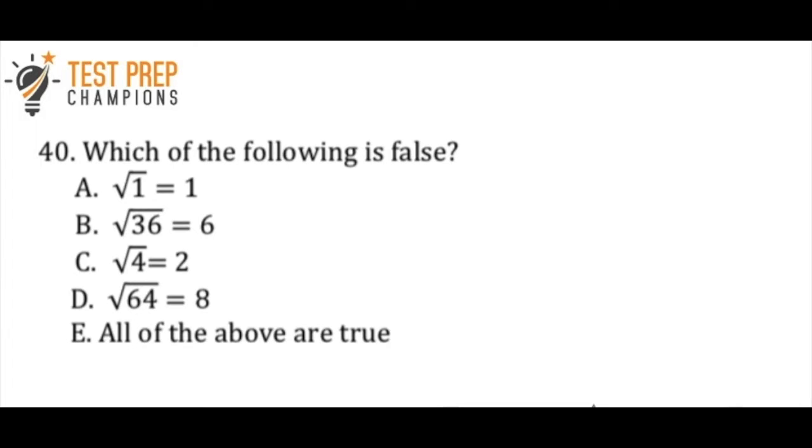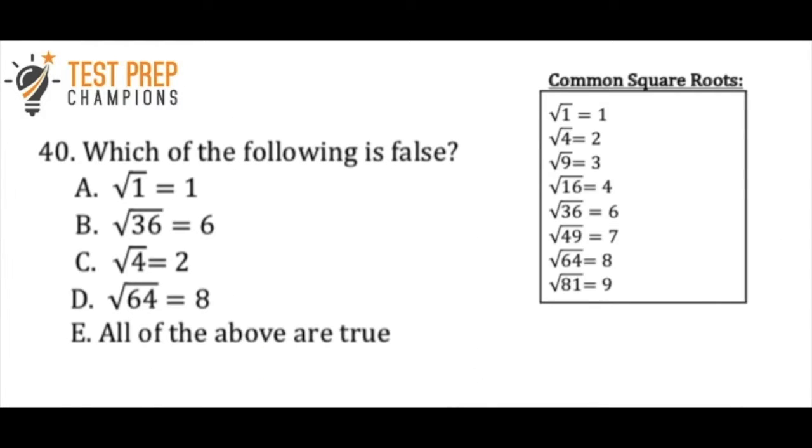Okay, the first question on this quiz, or number 40 in our series, is which of the following is false? So I'd like you to pause the video, try to figure this out, and then we'll go over it. So the correct answer here is E, all of the above are true, and I've given you a list of some common square roots that you should know, so hopefully you got E as the correct answer, but if not, this might be something to add to your notes.